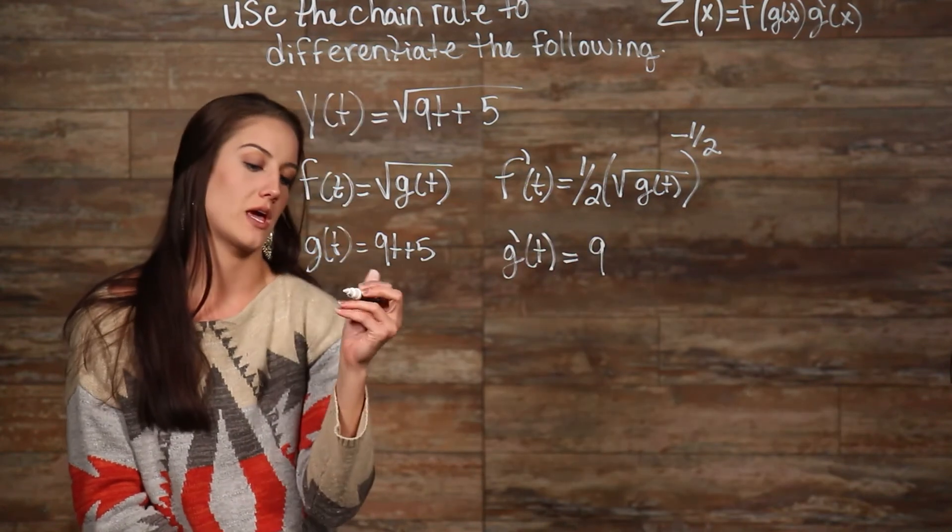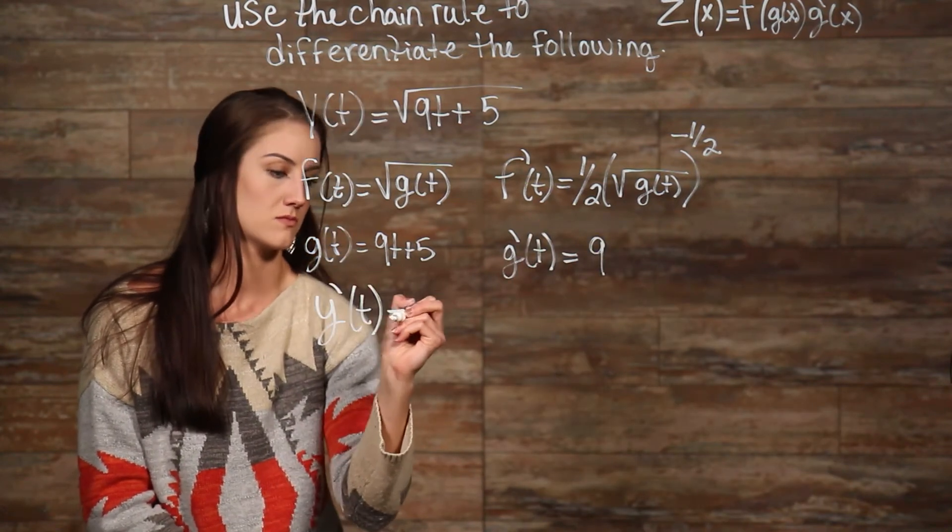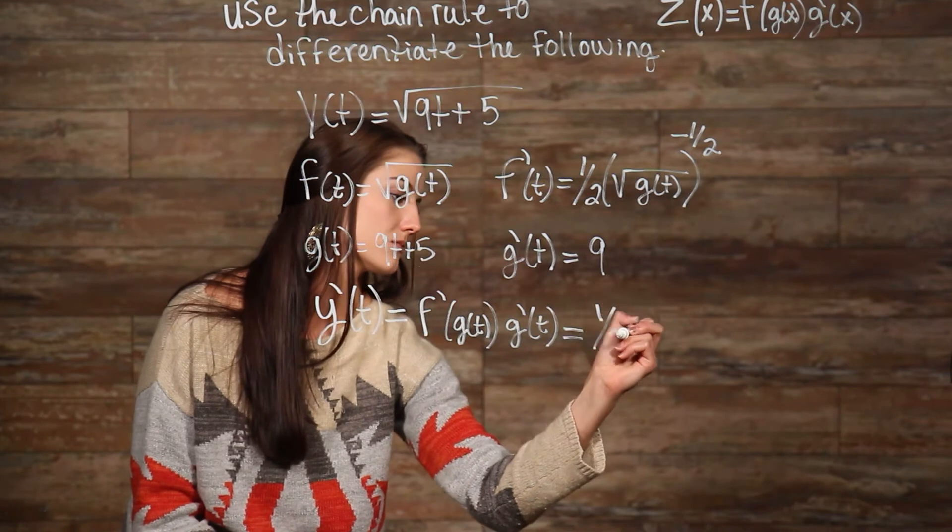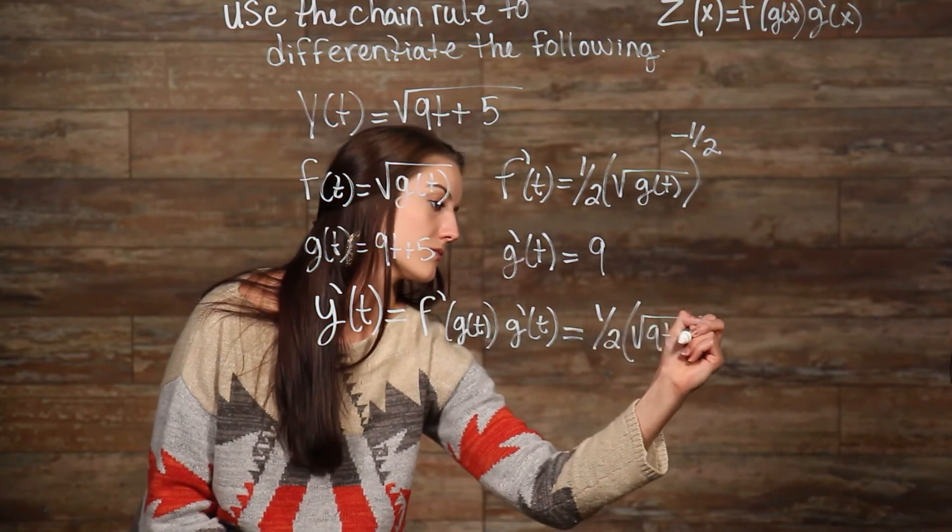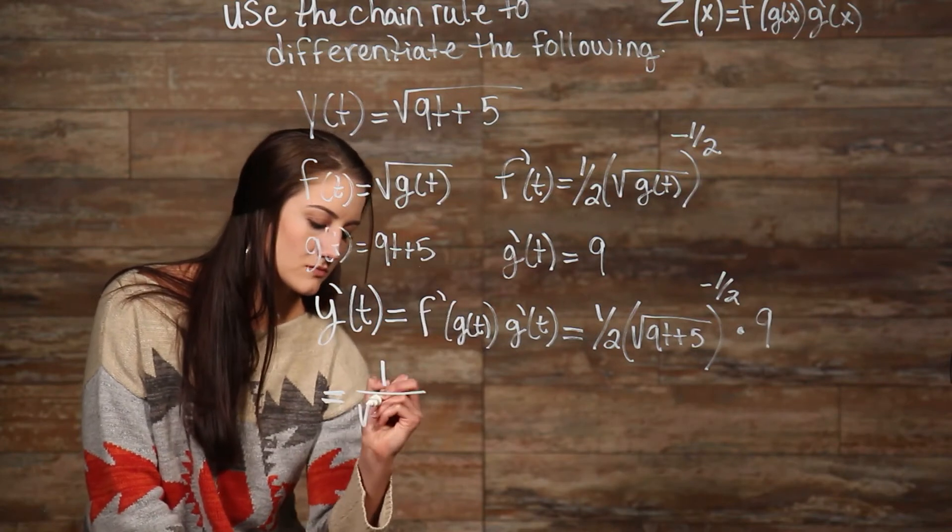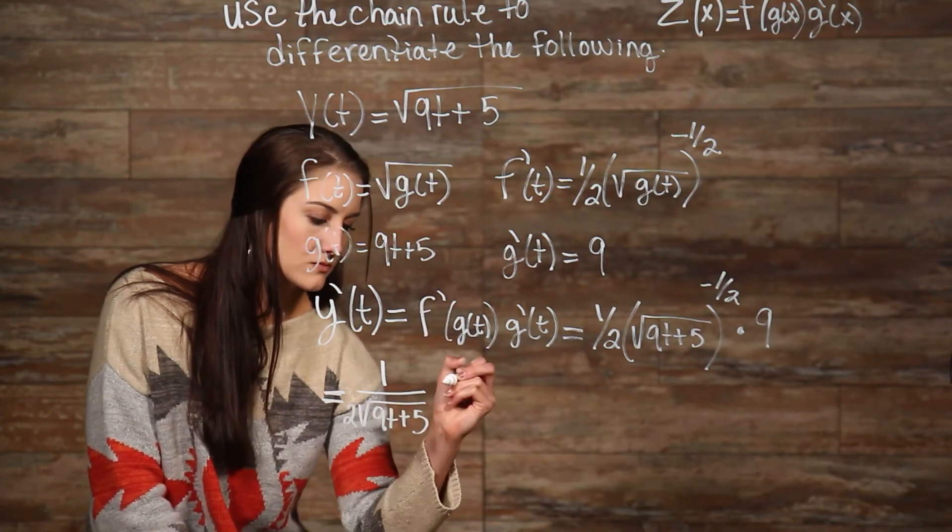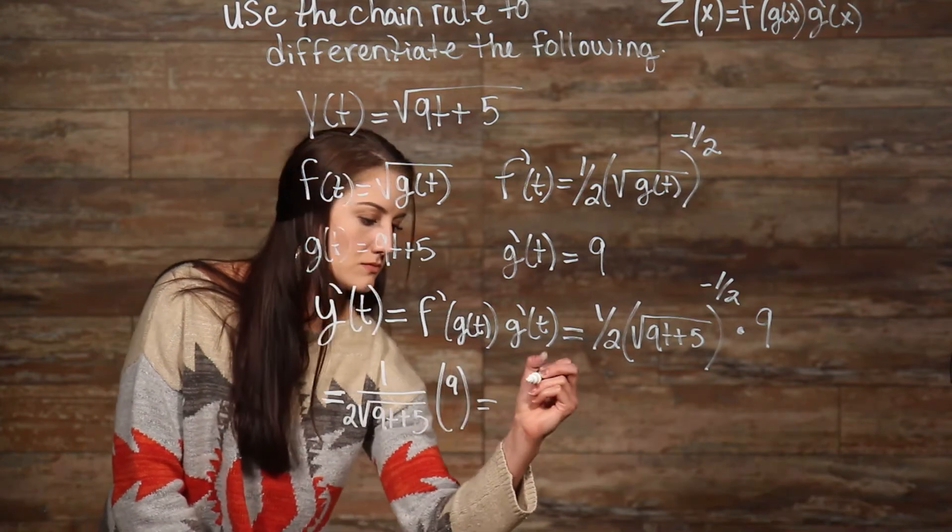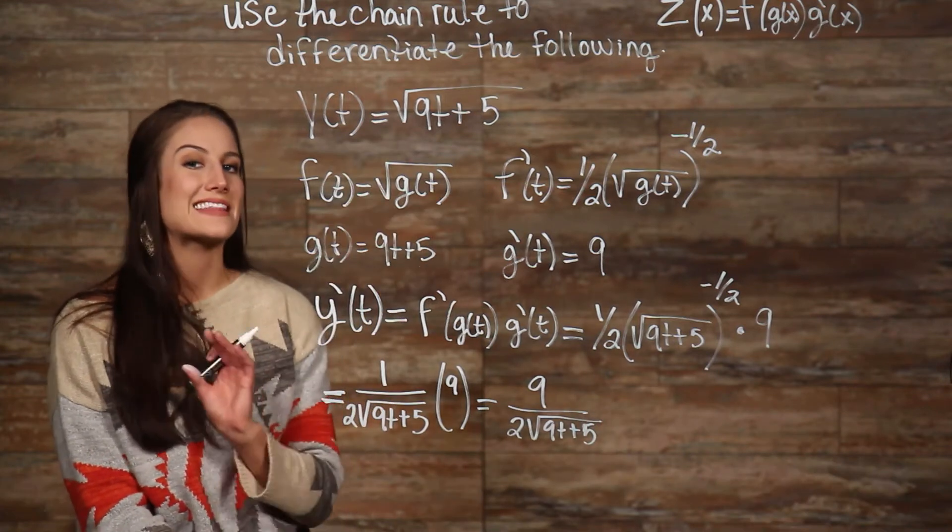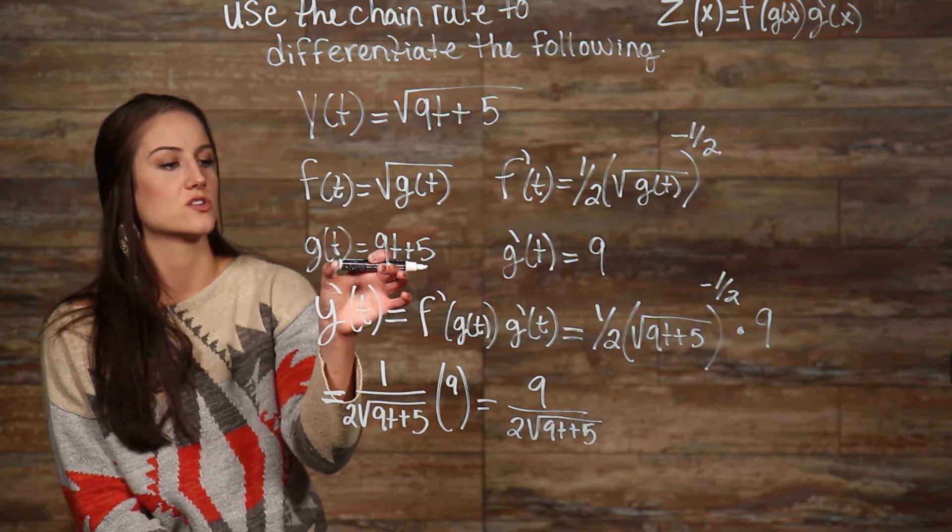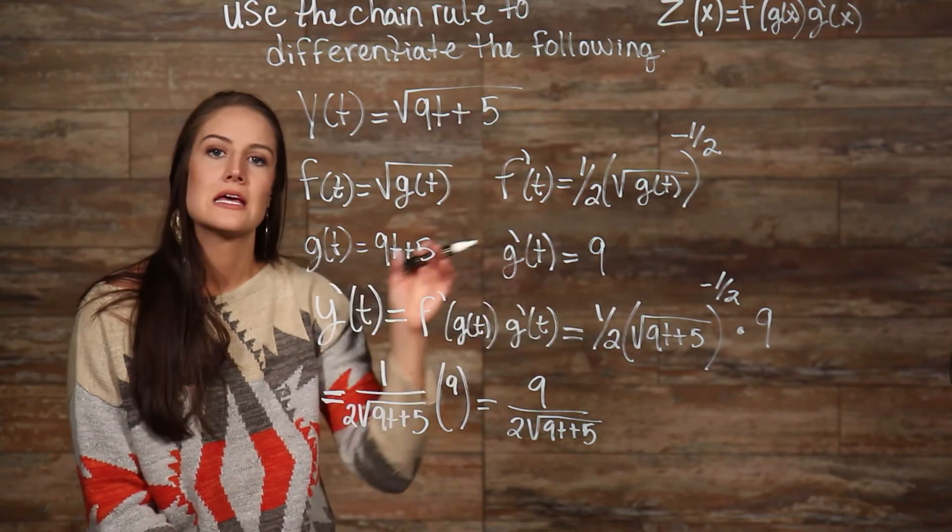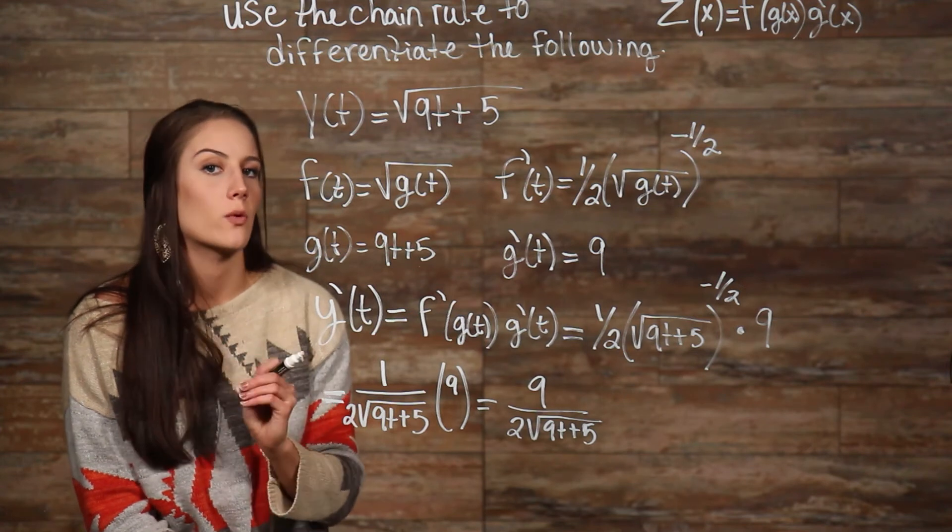Then, using the chain rule we get... and write the derivatives of these two functions. One thing that you'll notice, and I think is super helpful, is I always write out the two functions that my original function is made up of, and then I take their derivatives and write that out. This helps me to keep track of my work.